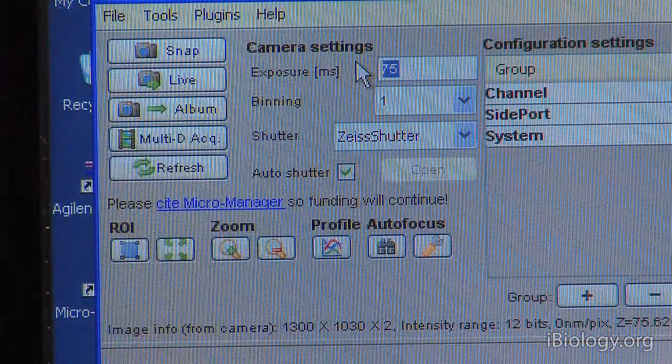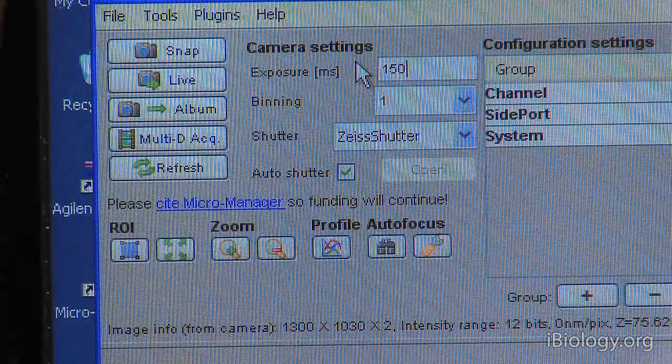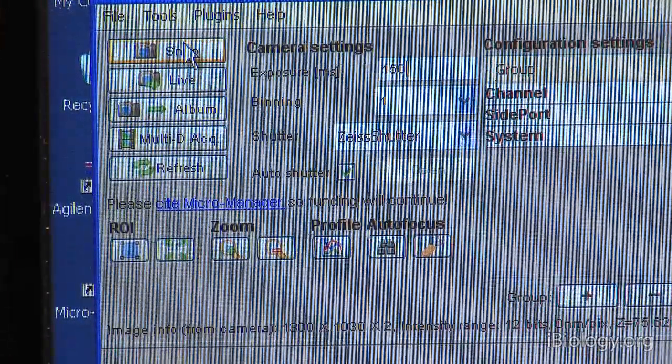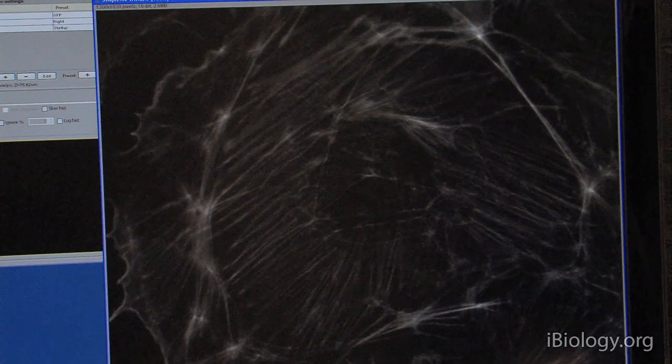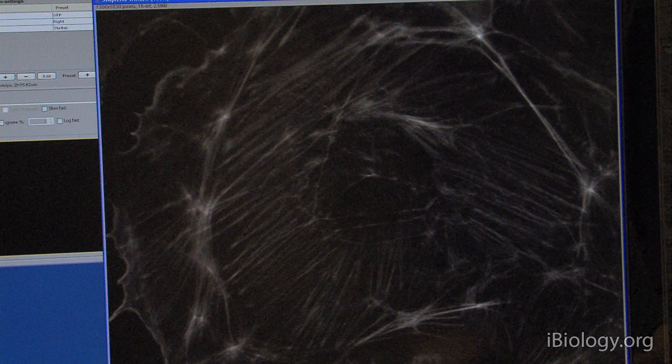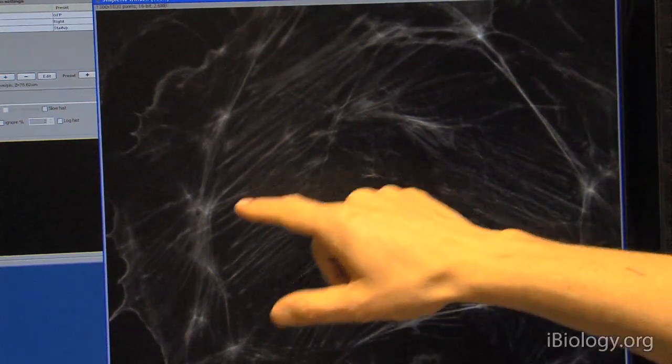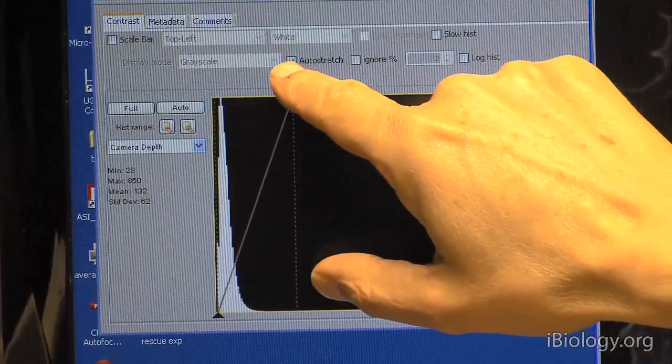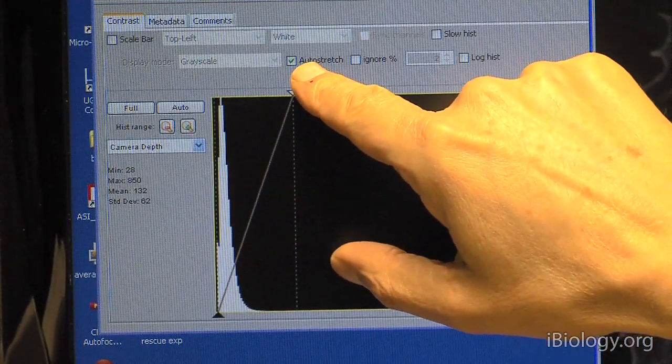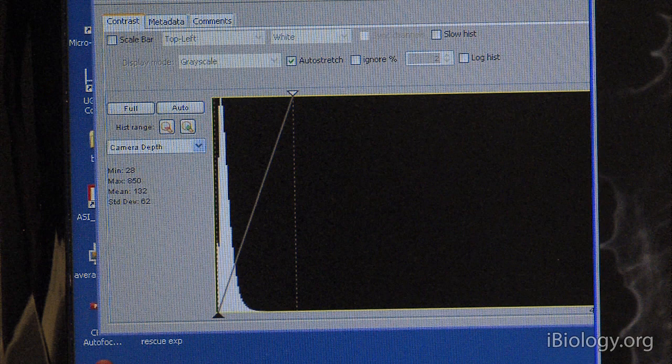So I can set an exposure time that is twice as long and then snap an image. And what you notice is that this image actually looks very, very similar. It didn't get twice as bright. And that is because here in this part, we have set the auto stretch checkbox.